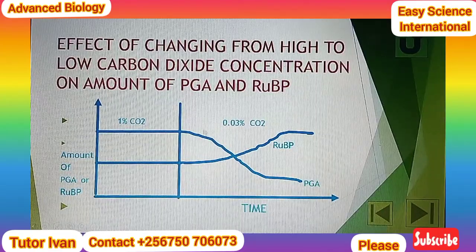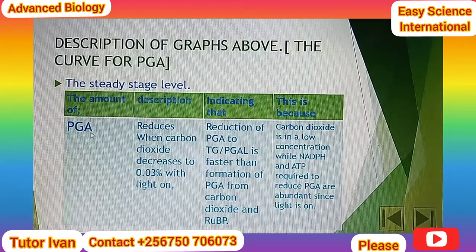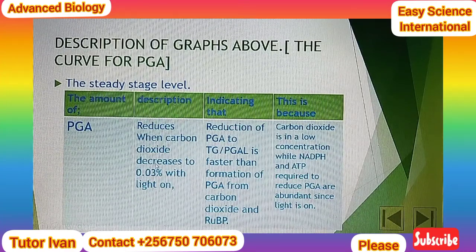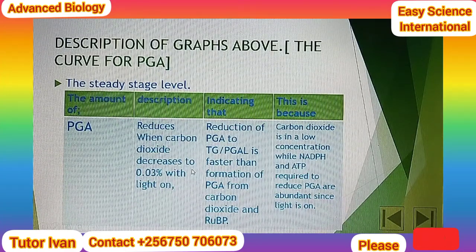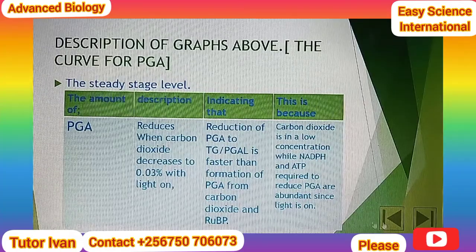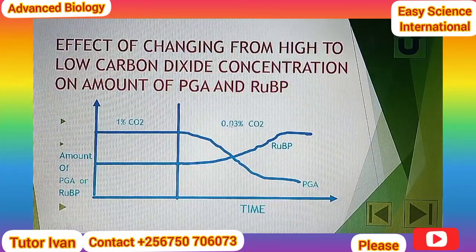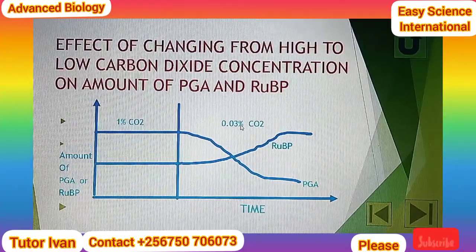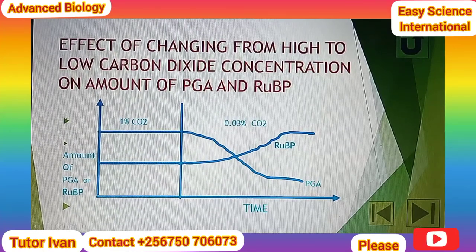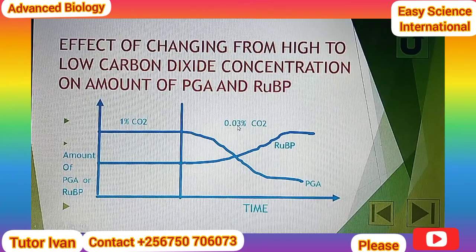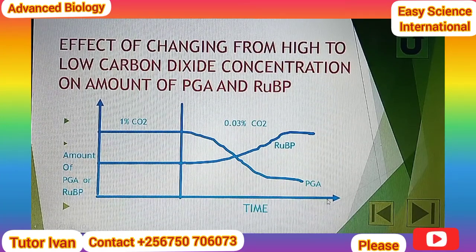So what happens? The amount of PGA — that is phosphoglyceric acid — reduces when carbon dioxide decreases to 0.03% with light on. We see that when light is on and we reduce the carbon dioxide concentration from 1% to 0.03%, the amount of PGA reduces. So, reducing the carbon dioxide concentration to 0.03% leads to a reduction in the amount of PGA.